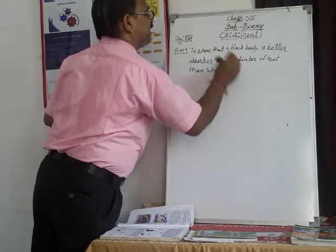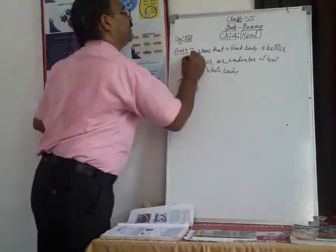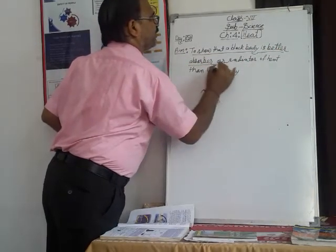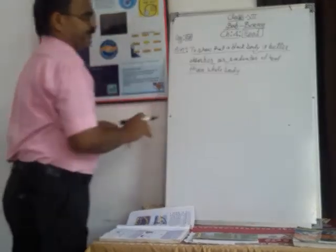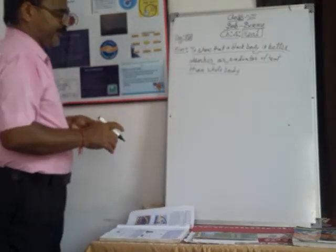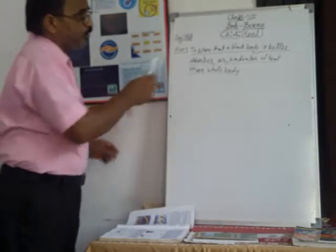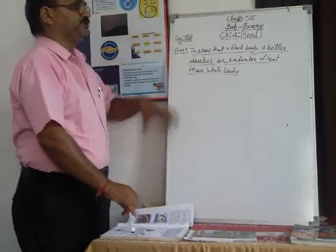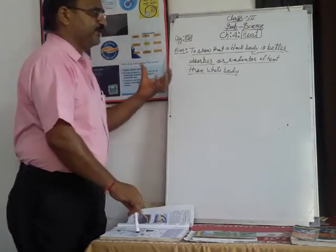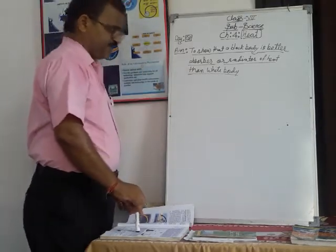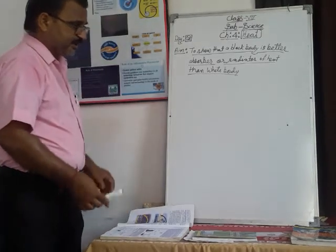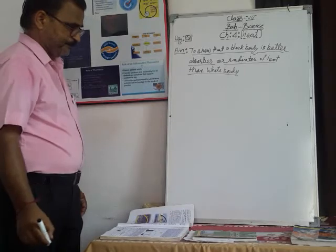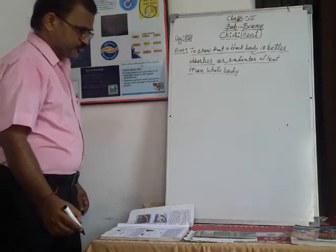Suppose you have two objects — one black object and one white object. We are saying that the black body absorbs heat quickly and radiates heat quickly, whereas the white body absorbs heat slowly and releases heat slowly. We want to clearly show this through an experiment.